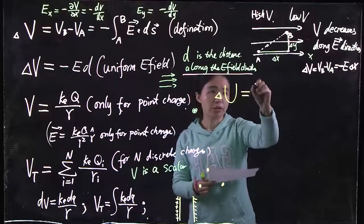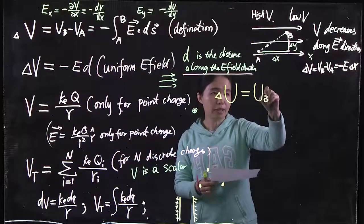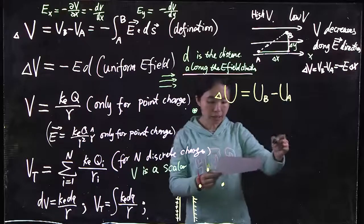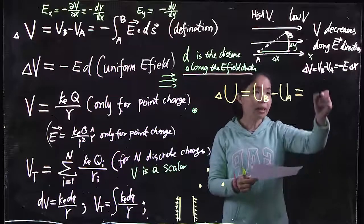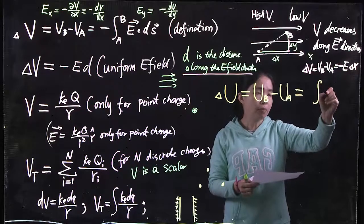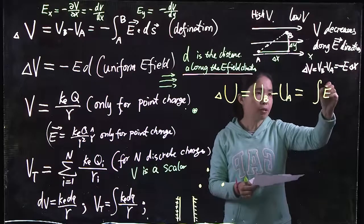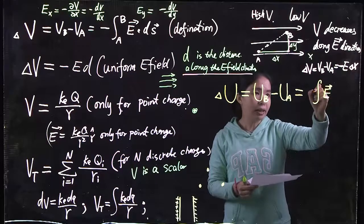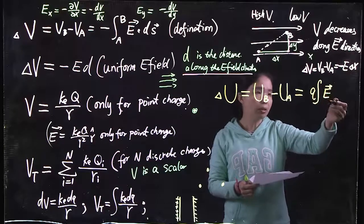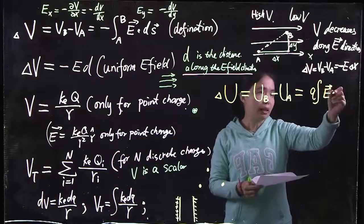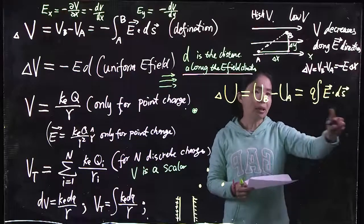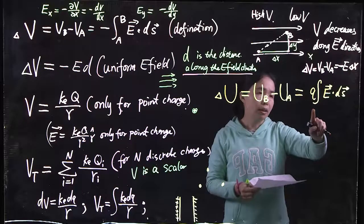The change of potential energy equals the final potential energy at location B minus the initial potential energy at location A, which is equal to integrating using a force applied to the charge. The force applied to the charge is the E field multiplied by Q, and Q is constant — it's not changing. We take Q out of the integral. That force times dS gives you the amount of work done by the E field.